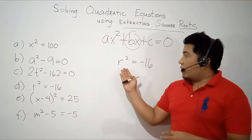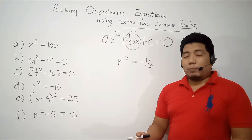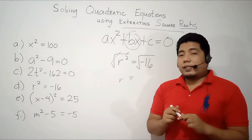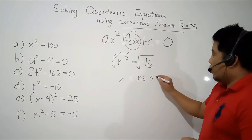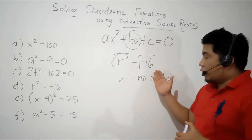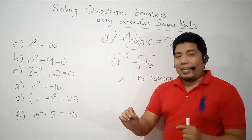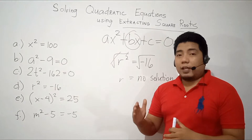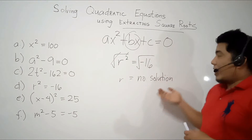We are now on the fourth example: r² = -16. Since the variable is already isolated, we can apply the square root to both sides. This cancels and gives us r. However, is there a number multiplied by itself that equals negative 16? None. Therefore, the answer here is no solution, because we are only considering real numbers. This is an example with an imaginary number — the answer would be 4i, or 4 times the square root of negative 1. But since we are in the real number system, the square root of negative 16 is not part of it. Therefore, our final answer is no solution.